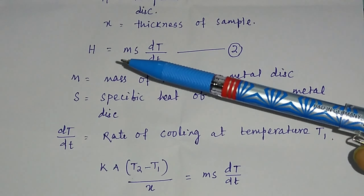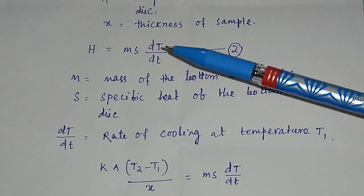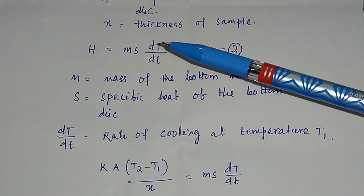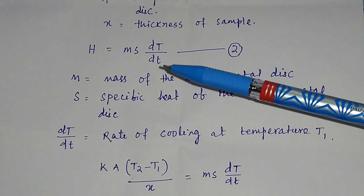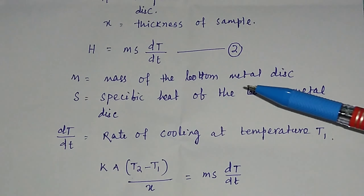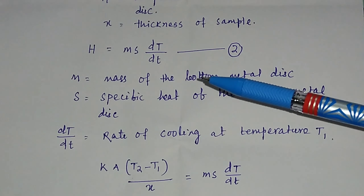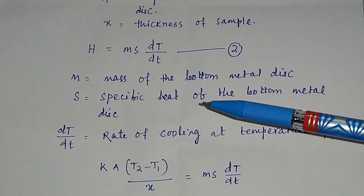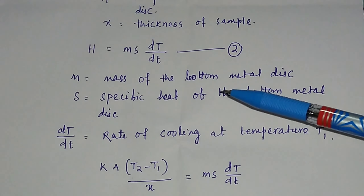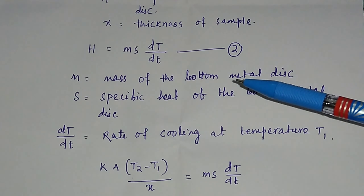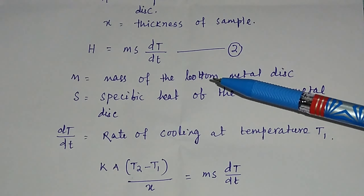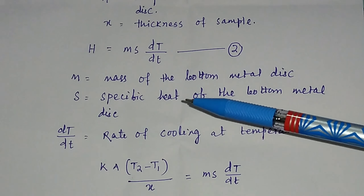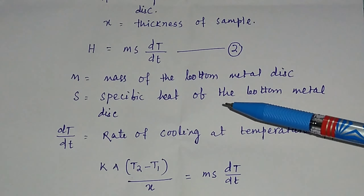The amount of heat due to radiation is H = ms(dT/dt), where T is temperature and t is time — meaning the amount of heat radiated per second. Here m is the mass of the bottom metal disk, which is made of steel, and s is the specific heat of the bottom metal disk. You can find the mass using a balance and the specific heat from known values.